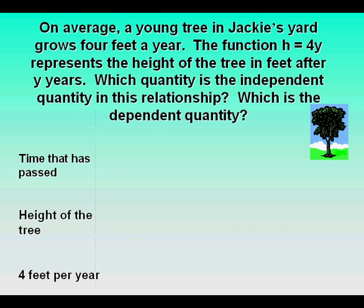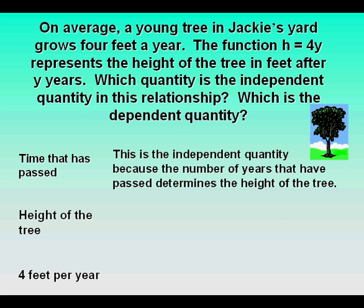Let's look at a problem. On average, a young tree in Jackie's yard grows four feet a year. The function h equals 4y represents the height of the tree in feet after y years. Which quantity is the independent quantity in this relationship? Which is the dependent quantity? Time that has passed is the independent quantity because the number of years that have passed determines the height of the tree.